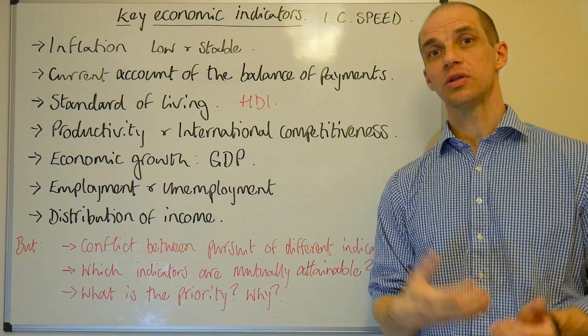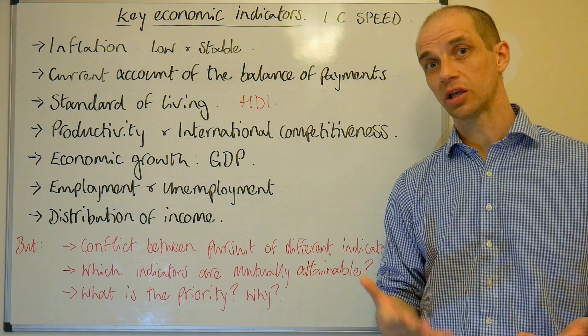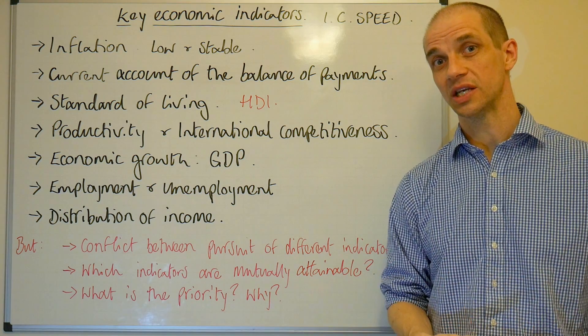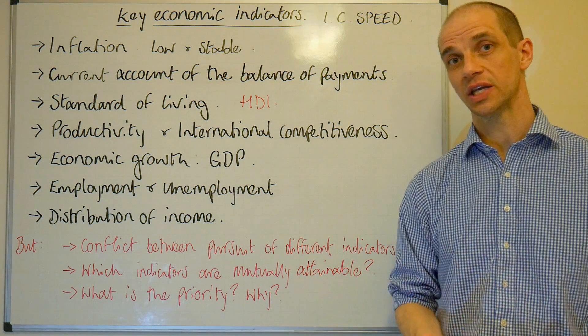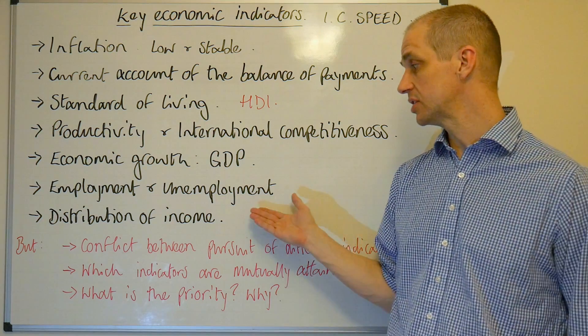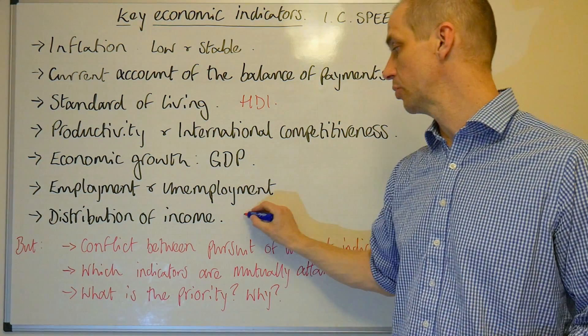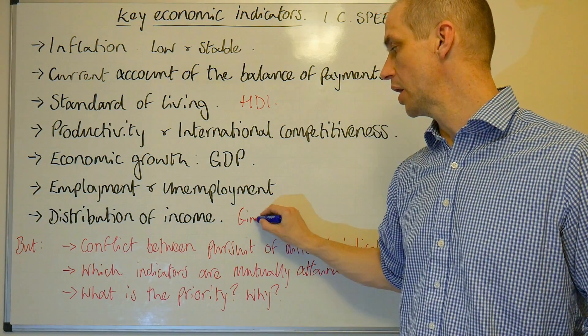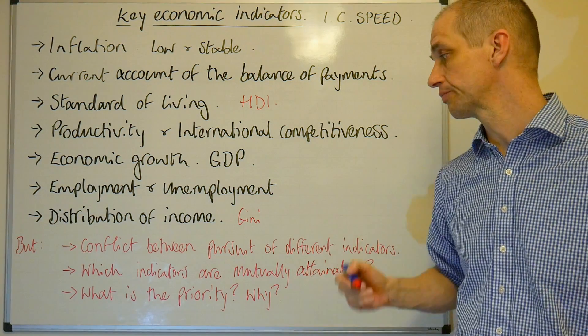And then we've got the distribution of income, so you don't want too much inequality taking place within a society. This tends to be measured by a measurement we'll see a lot of later on, and that is the Gini coefficient.